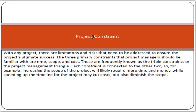Project constraint means a limitation – a boundary which you cannot cross. For example, if scope is a constraint, it means the agreed scope has been decided: you have to deliver five modules. You must deliver exactly five modules – no more, no less. Similarly, cost is a limitation; for example, the agreed maximum budget is five thousand dollars, and you must complete everything within that budget.